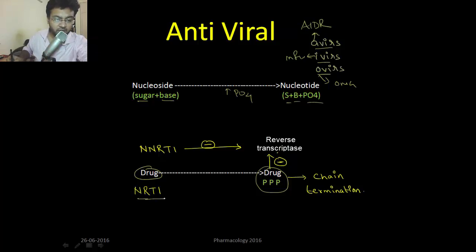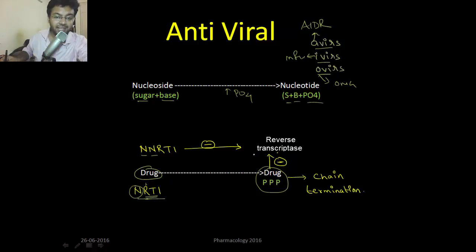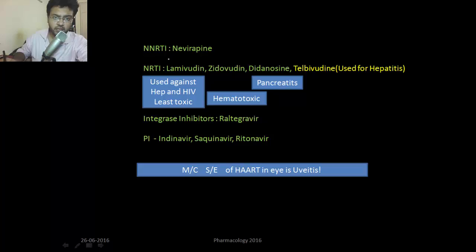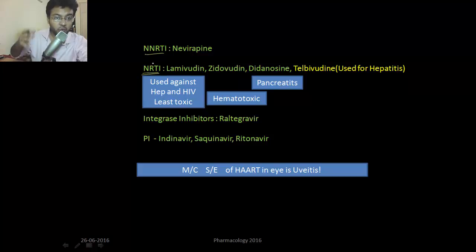These are nucleoside reverse transcriptase inhibitors — nucleosides which are converted into nucleotide and they inhibit reverse transcriptase. So they are called NRTIs. The other category of drugs, which are non-nucleosides, directly inhibit reverse transcriptase — they don't need phosphorylation themselves. Nevirapine is an example of an NNRTI, meaning it directly inhibits the RNA polymerase.